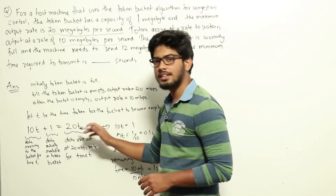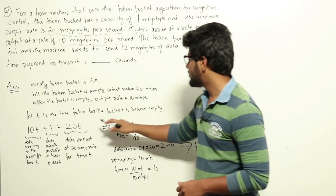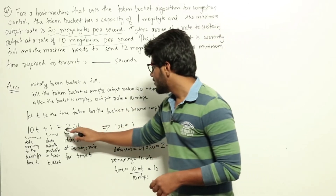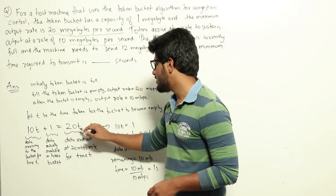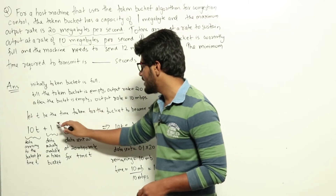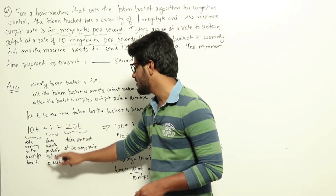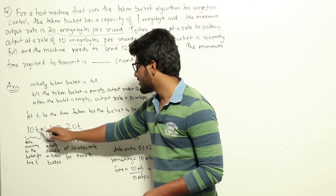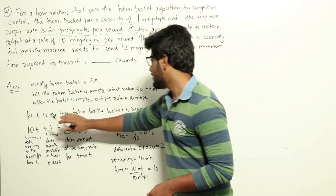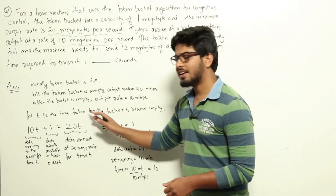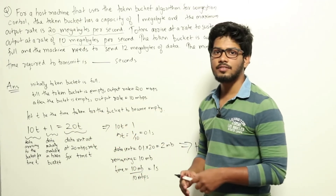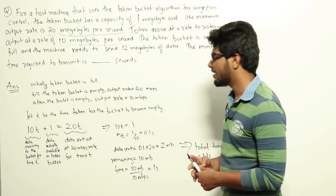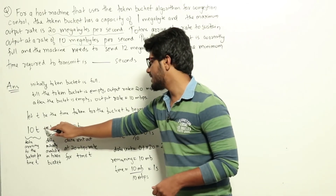After a while the bucket will become empty and only then will the rate go down to 10 megabytes per second. So for time t we send out 20t amount of data, which equals 1 megabyte already in the bucket plus 10t — since the arrival rate is 10 megabytes per second. This gives the expression: 10t + 1 = 20t.